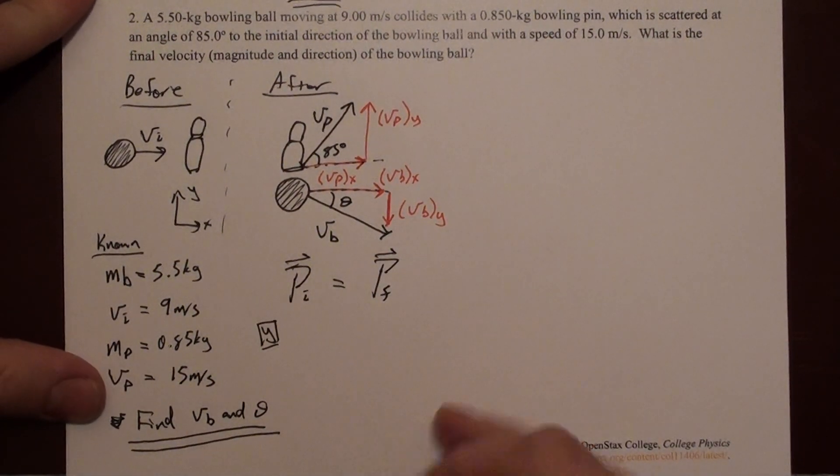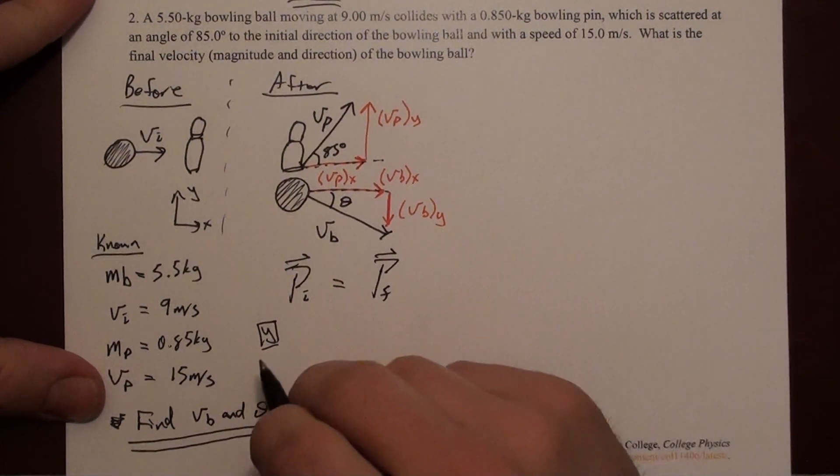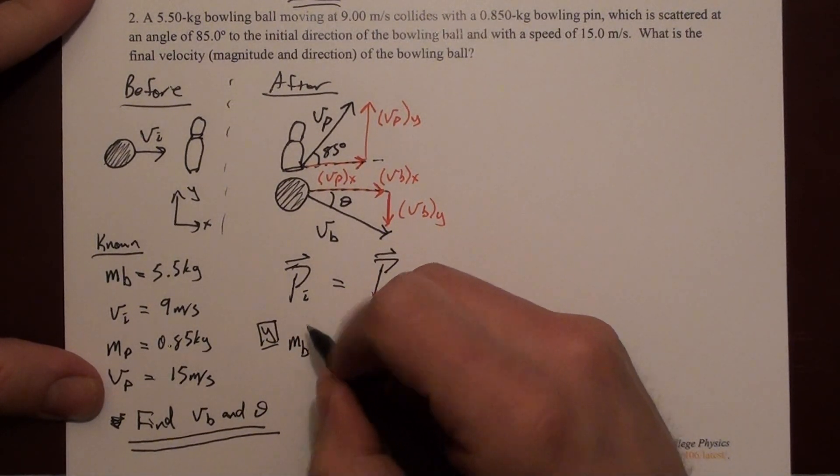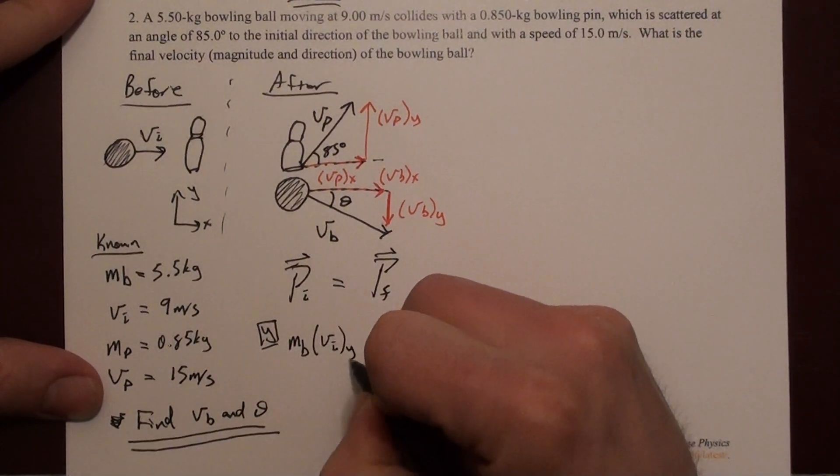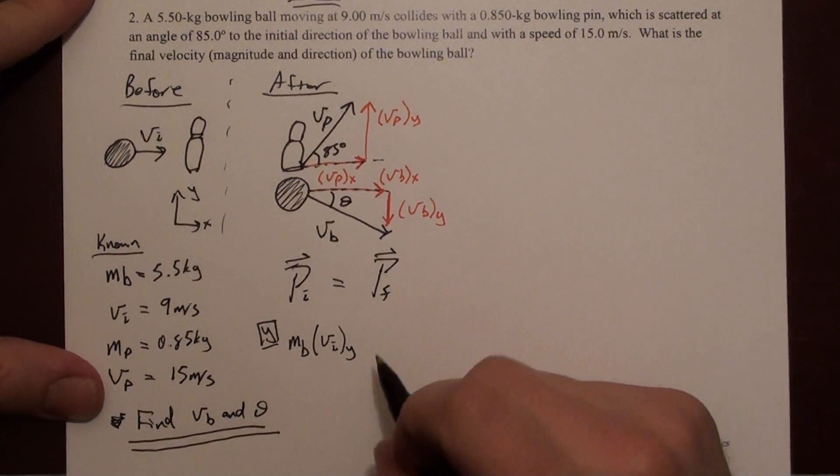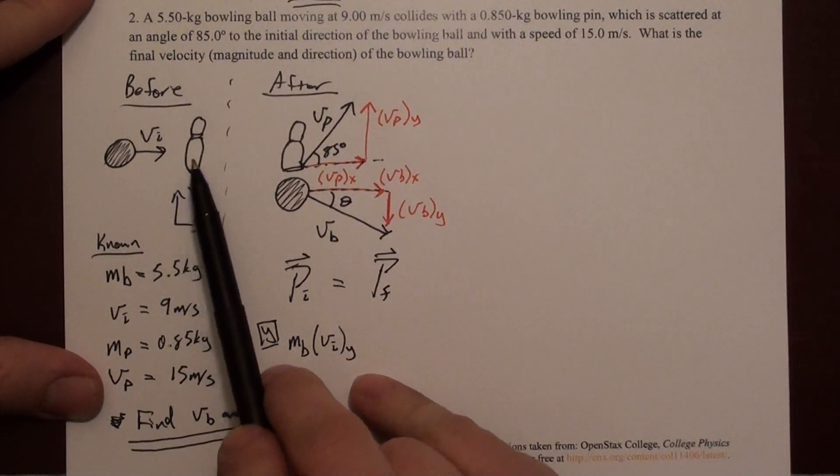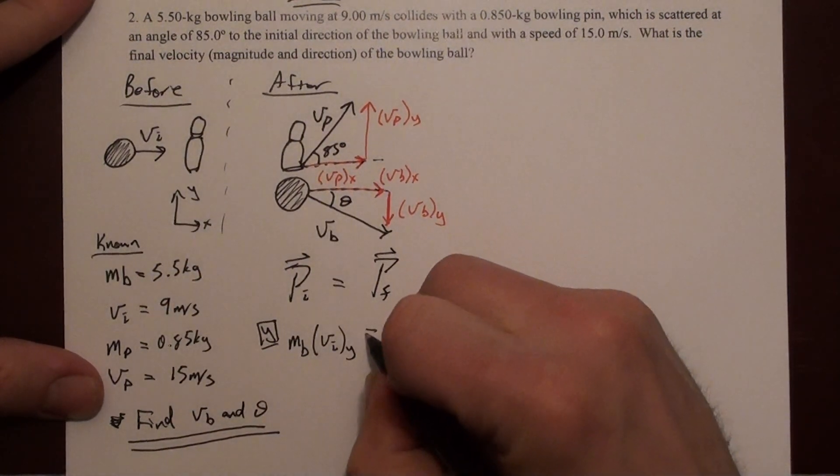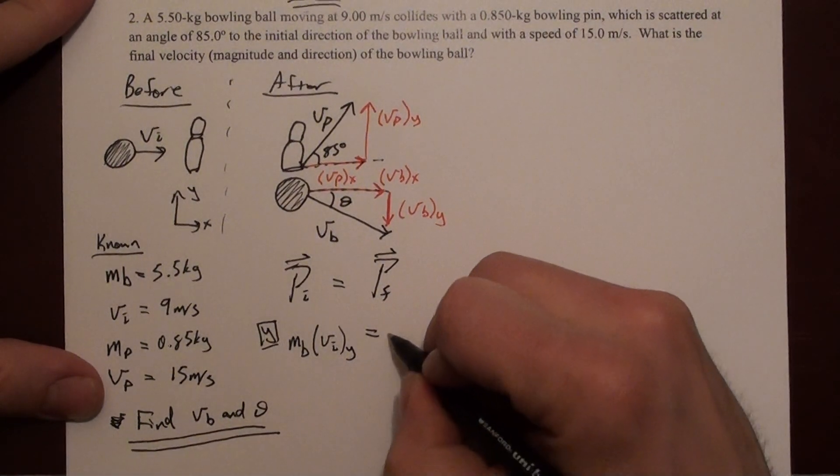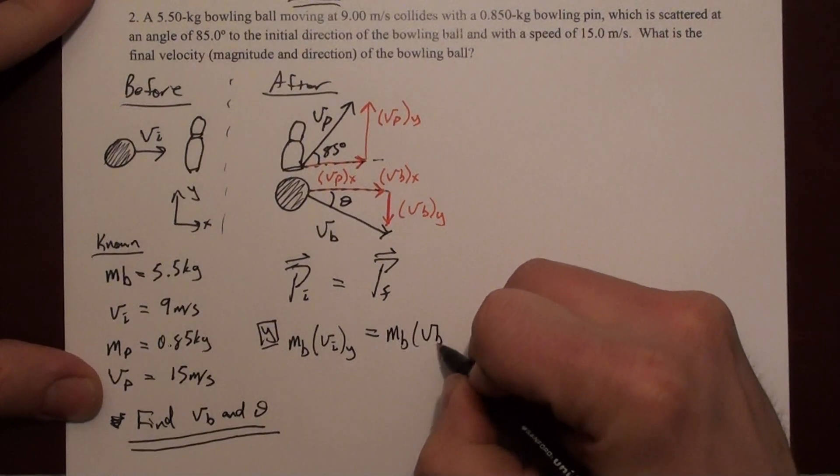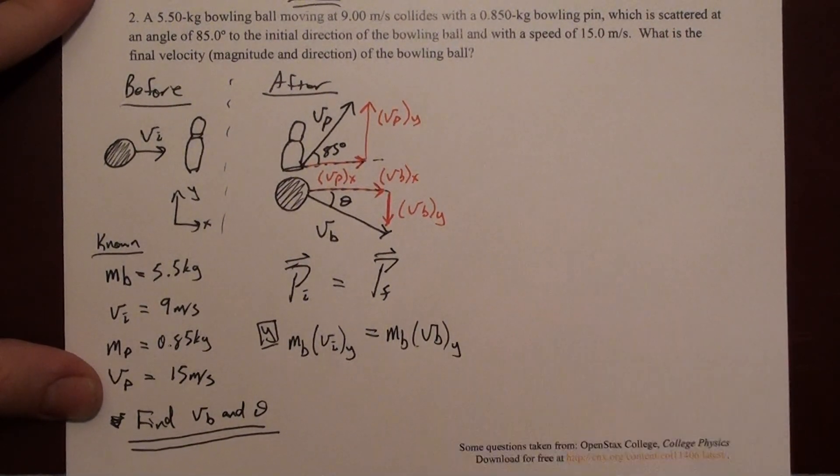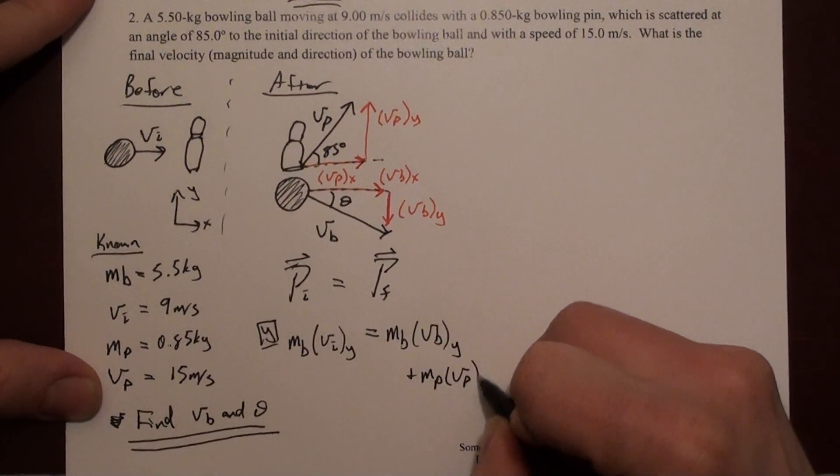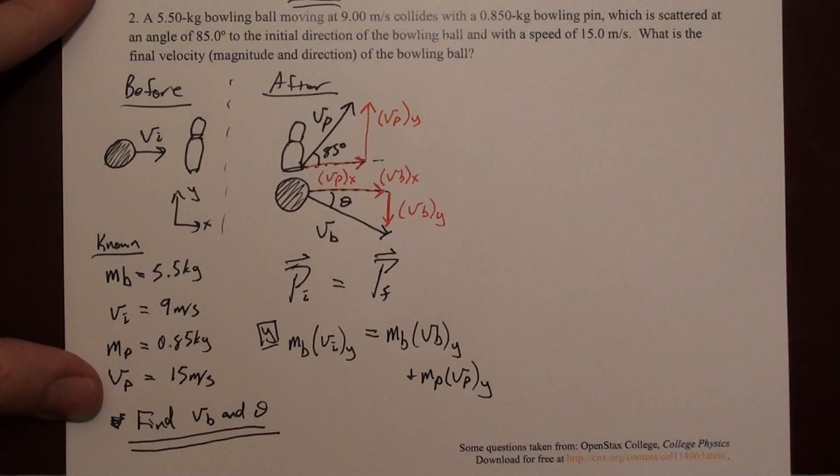We can write this as mb times v initial y. We could also add mass of the pin times its initial velocity, but we know that it's zero from our diagram, so I'm not even going to include it here. For afterward, we can say mass of the ball times v ball y plus mass of the pin times v pin y.